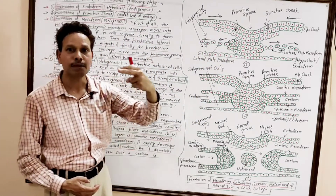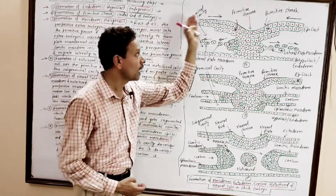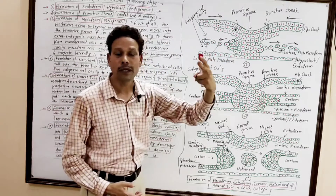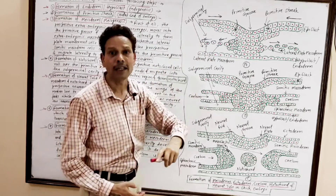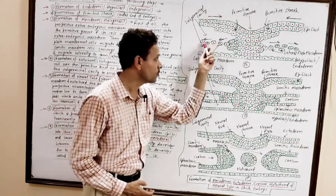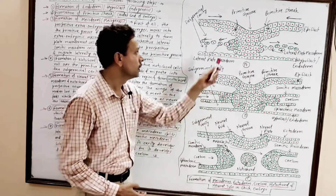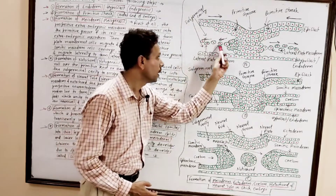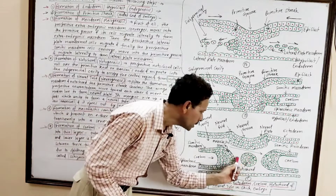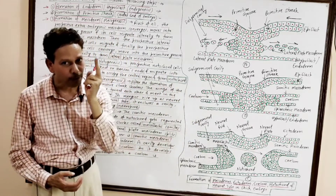In mesoderm formation, prospective extra-embryonic mesoderm cells converge, invaginate, and move outward to produce extra-embryonic mesoderm, then the prospective lateral plate mesoderm and somatic mesoderm do the same. After formation of hypoblast, primitive streak, and mesoderm, the next step is formation of the notochord — notogenesis — carried out by the rolling of prospective notochord cells.